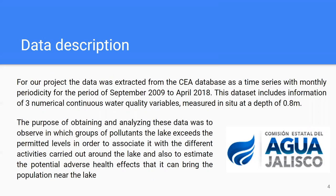For our project, we have data from September 29, 2009 to April 2018. These datasets include information of three numerical continuous water quality variables. The purpose of obtaining this data was to analyze which groups of pollutants exceed the permitted levels and are associated with different activities carried out around the lake and some milestones, such as the changing type of agricultural activities and the introduction of water treatment plants.